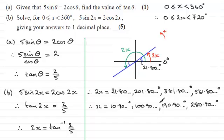All of these are in degrees. We need to give our answers to one decimal place. So we have: x = 10.9°, 100.9°, 190.9°, and 280.9°, all to 1 dp.